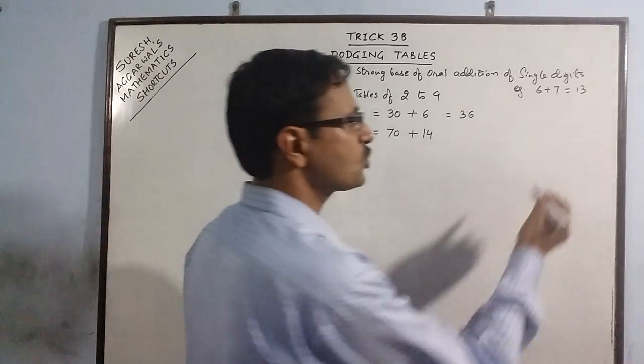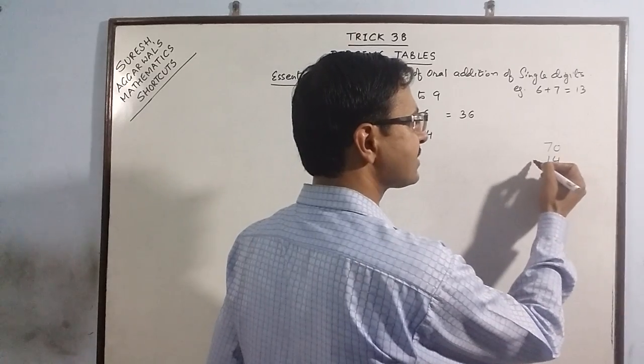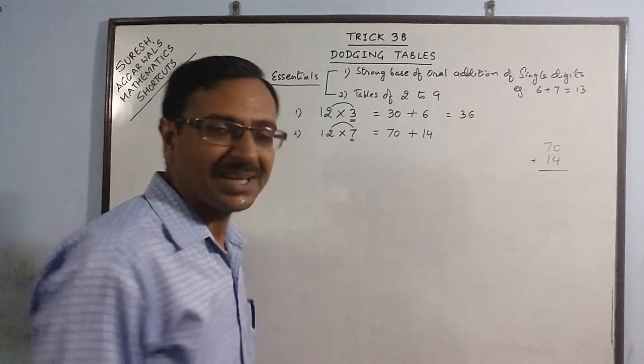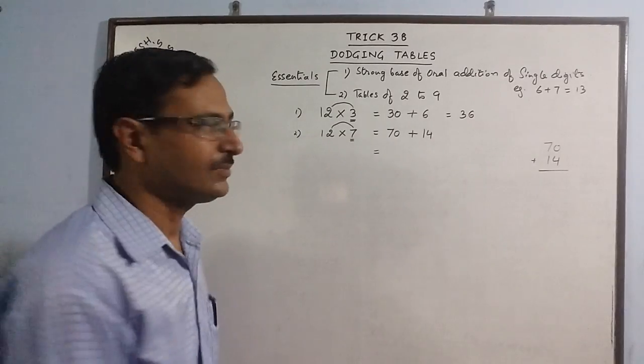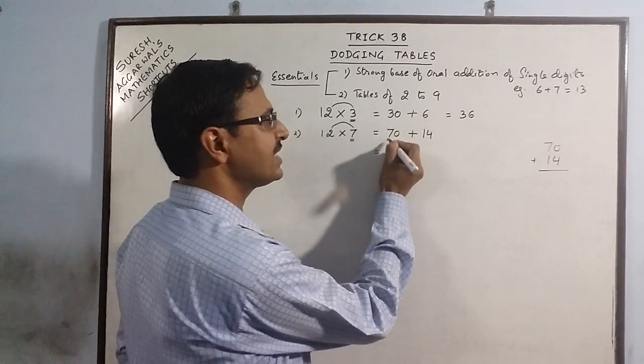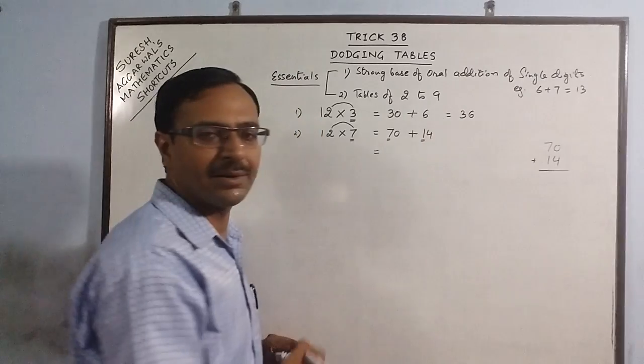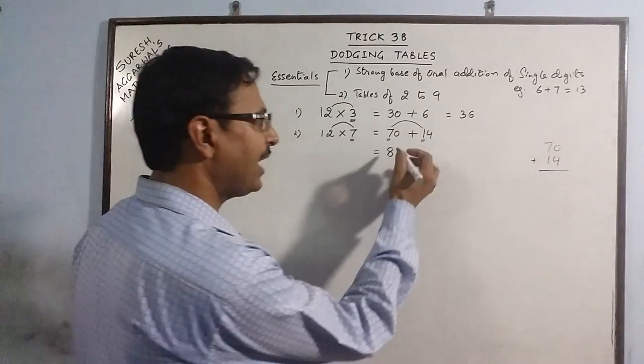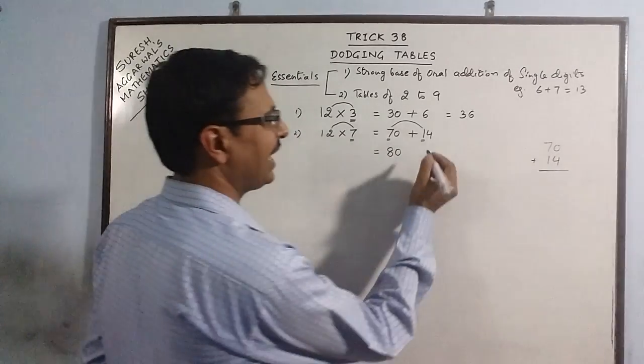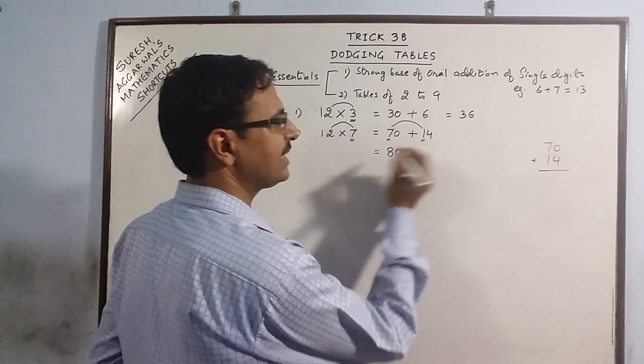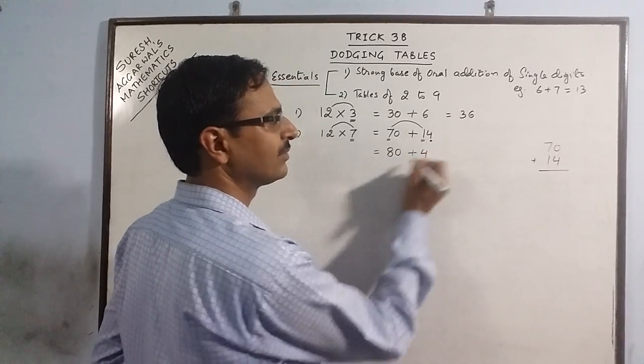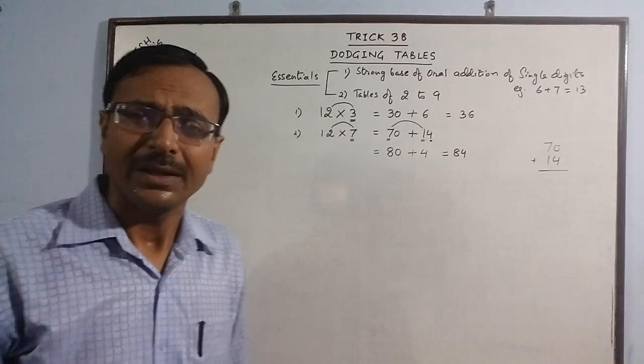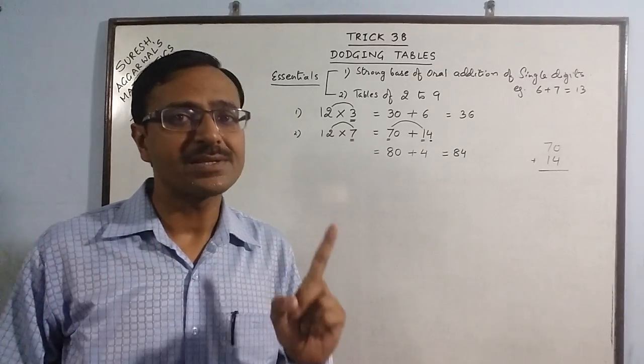When we have to add 70 and 14, the child has to be taught not to add like this. He has to do this mentally, and for that, again we apply the same rule. Here the tens digit is 7, tens digit is 1, 7 plus 1 is 8. He puts a 0 and what is he left with is this digit 4. So now it is very easy to add: 84. Two small steps and the problem gets solved.